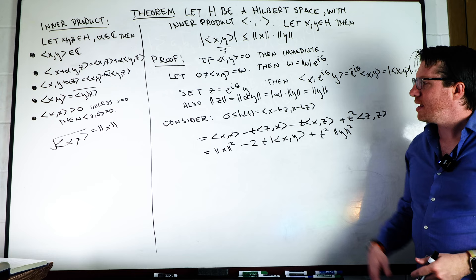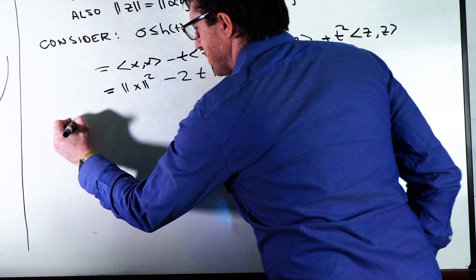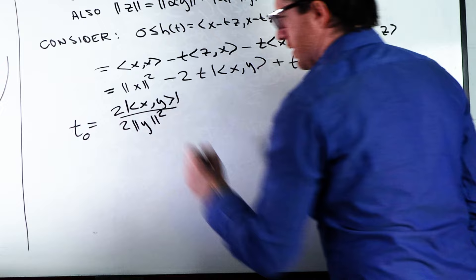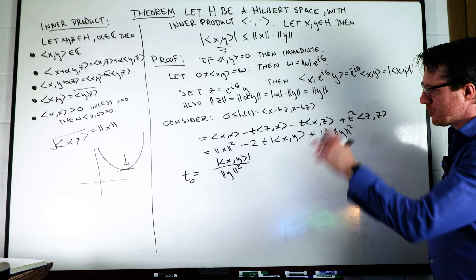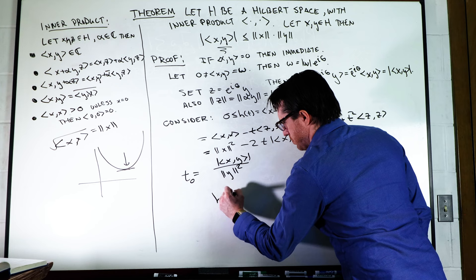We have something that looks like this, and that minimum happens at minus b over 2a, or the minimum itself is going to happen at t_0 equals 2 times the absolute value of x inner product y divided by 2||y||^2, right, and those twos cancel, of course, so we'll go ahead and get rid of that. So if I plug this back into h, I find my smallest value.